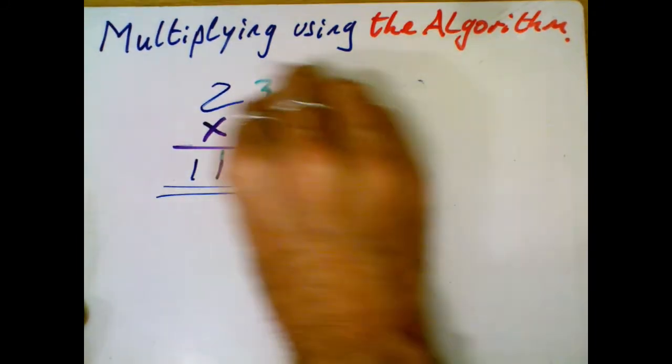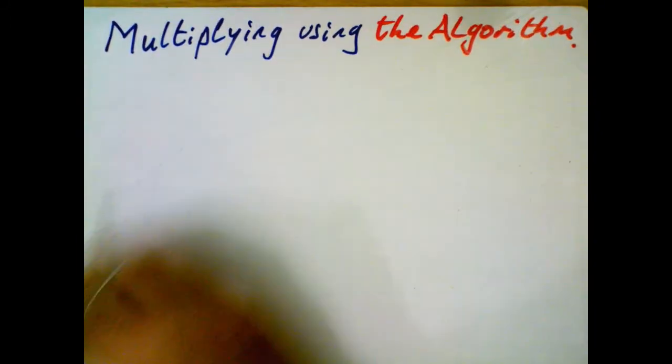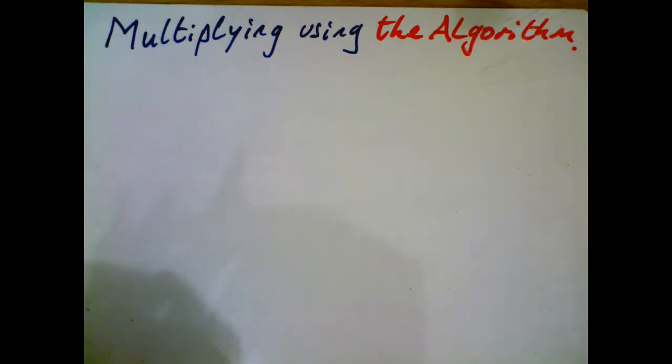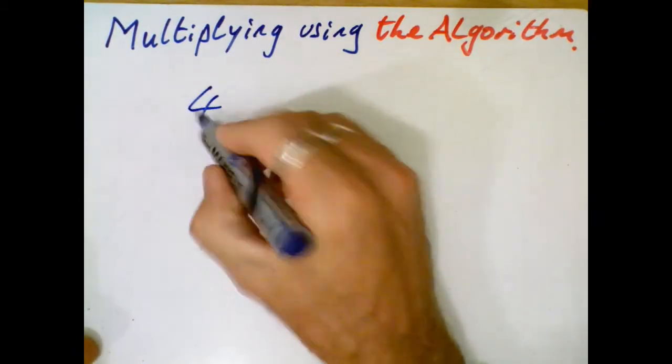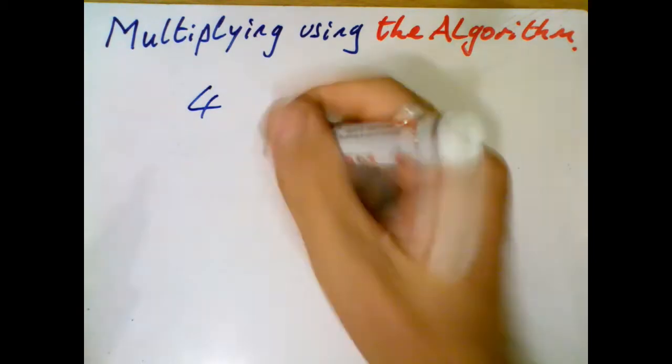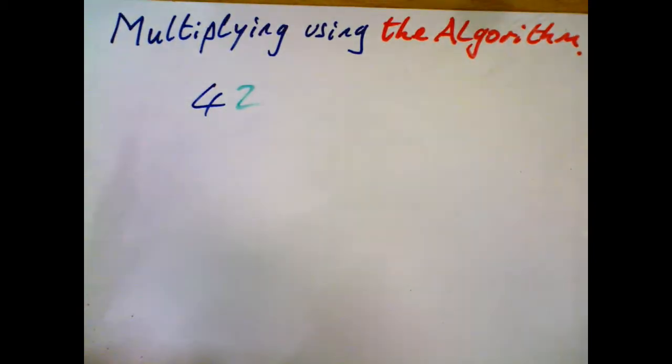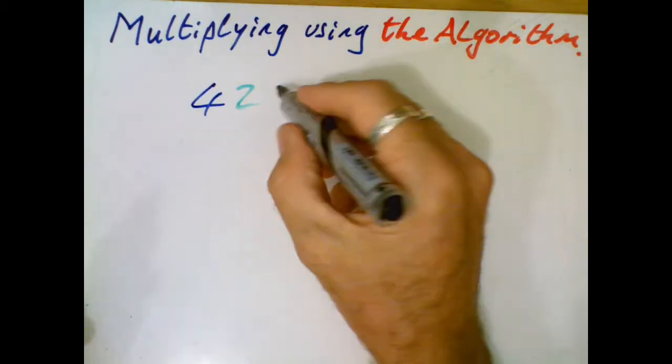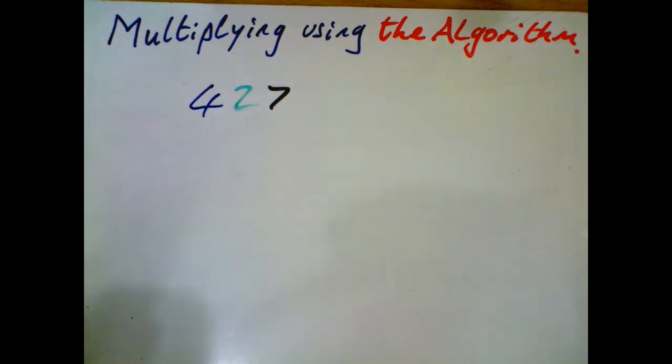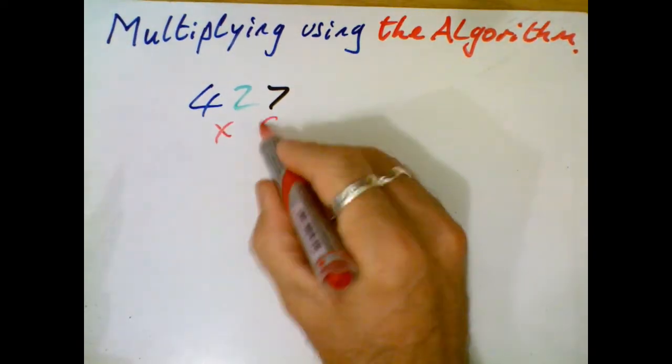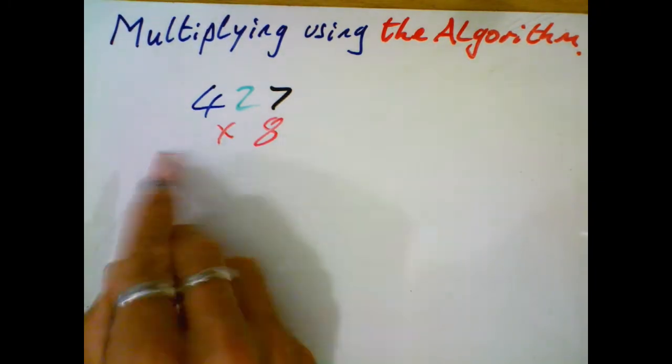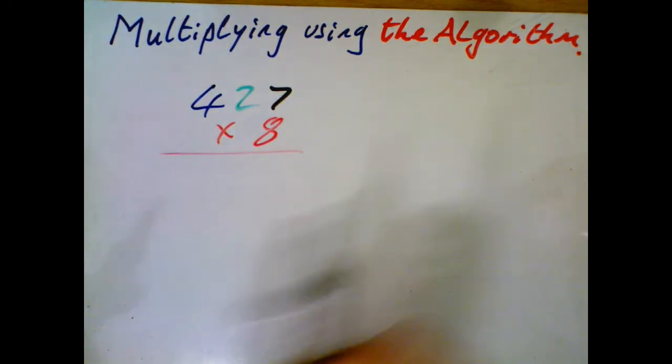Okay, good. Right, so that seemed easy enough. Two-digit number by one-digit number. I've got a longer number. 427, maybe. I don't know which colors I'm using. And let's multiply that by 8. Okay, I'm getting some number facts here, aren't I? So I'm dealing with the ones first of all.